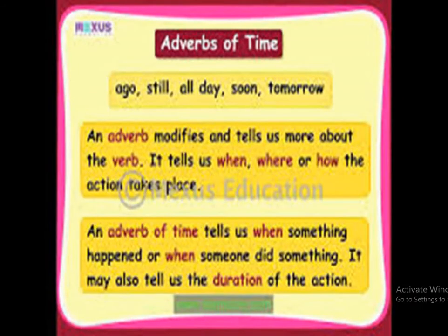Now the next is adverb of time. Similarly to adverb of place, the word which tells us when something is going to happen, which indicates the time — when the action is being done — this is the adverb of time. For example: ago, still, all day, soon, tomorrow. The adverb tells us more about the verb — like when, where, and how.